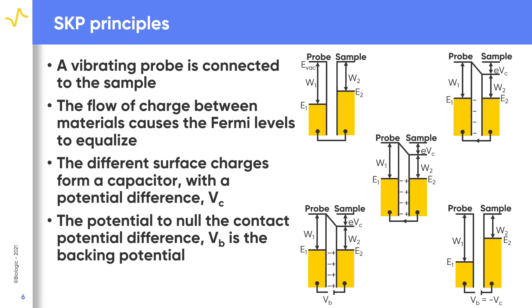To determine the contact potential difference, a backing potential is applied between the probe and sample to null, or eliminate, the charge. This backing potential is equal but opposite to the contact potential.